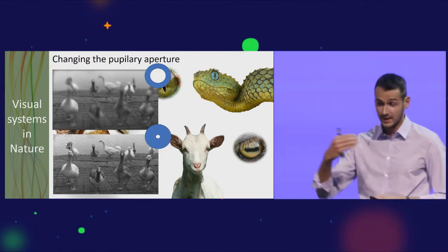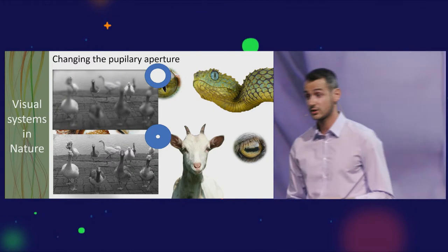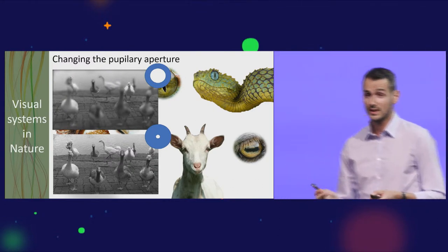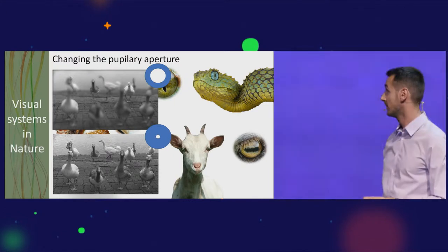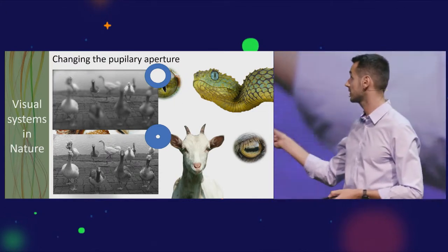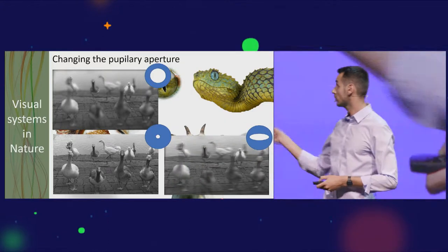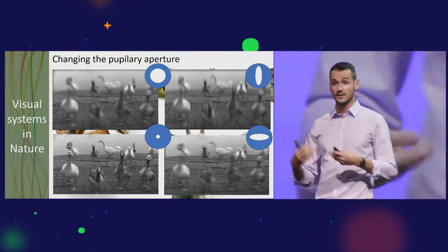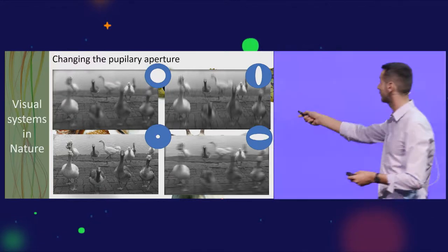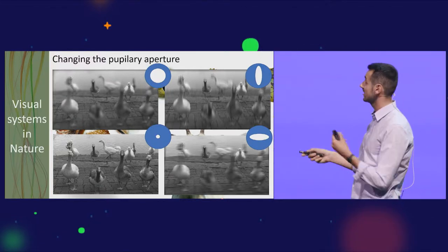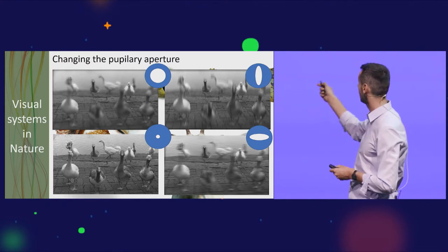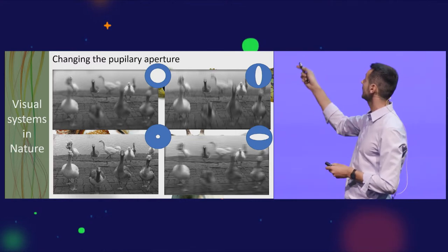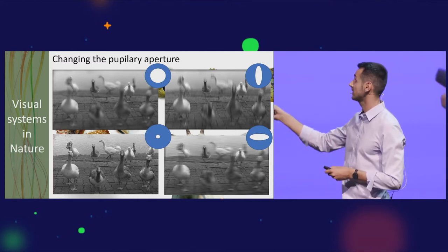Interestingly, this design of a circular aperture for humans is not widely spread in nature. Let's look at the domestic goat with a horizontal aperture. It turns out that horizontal apertures or vertical apertures for the tree viper put certain things out of focus. If you have a horizontal aperture, you will typically better see lines which are horizontal in the background. With a vertical aperture, you'll better see vertical lines.